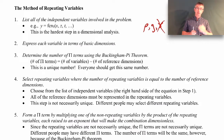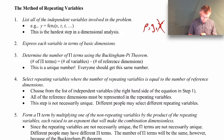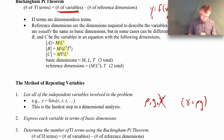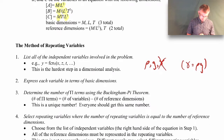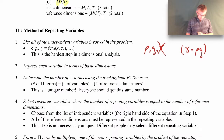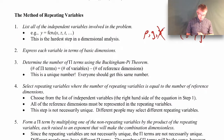Once you have the list of variables, the rest of the procedure is pretty straightforward. Step two is to express each variable in terms of basic dimensions — mass, length, and time are the most common ones we encounter. We do that for every variable in our list. Then step three is to determine the number of pi terms using the Buckingham Pi theorem: the number of pi terms equals the number of variables from step one minus the number of reference dimensions.